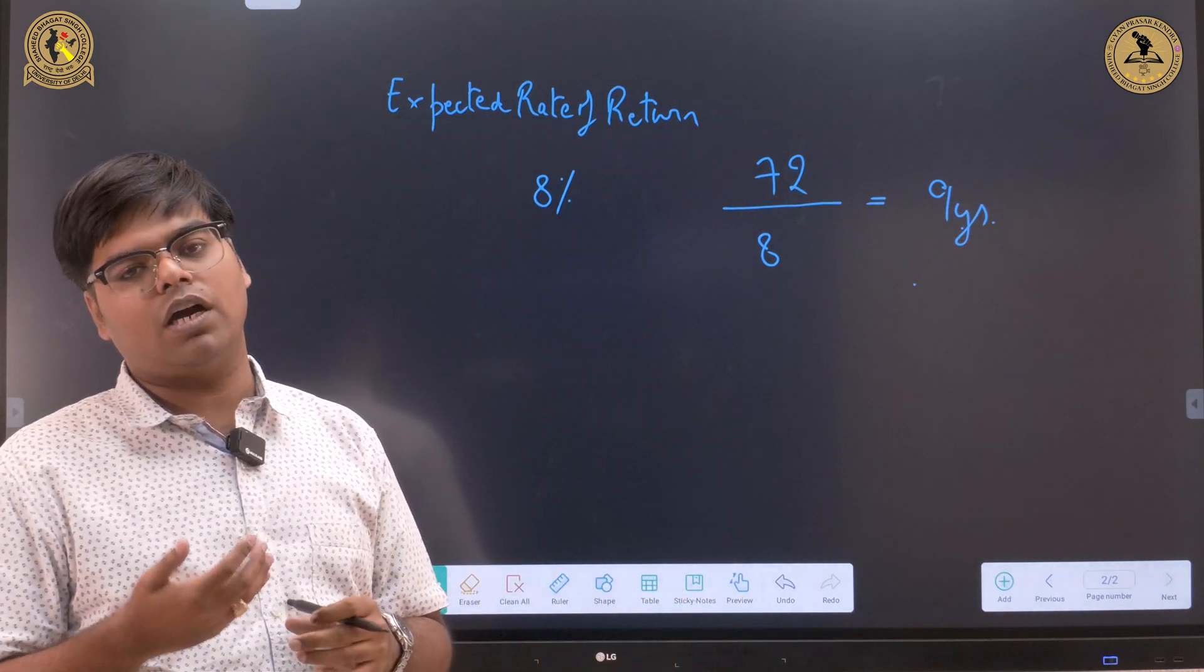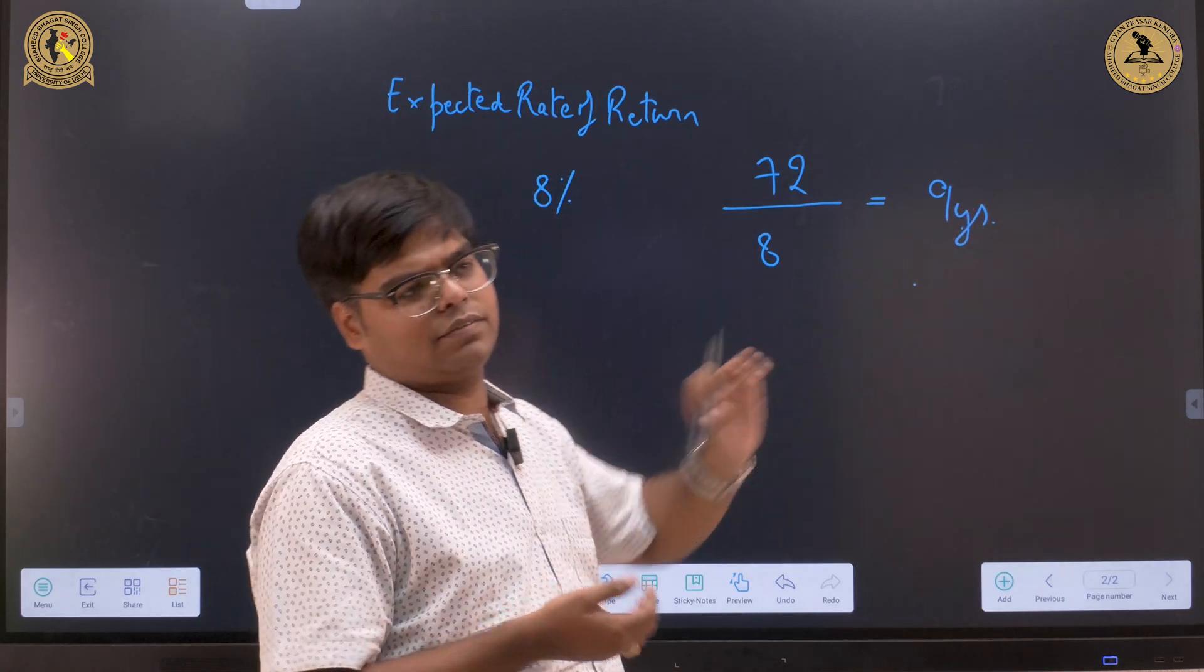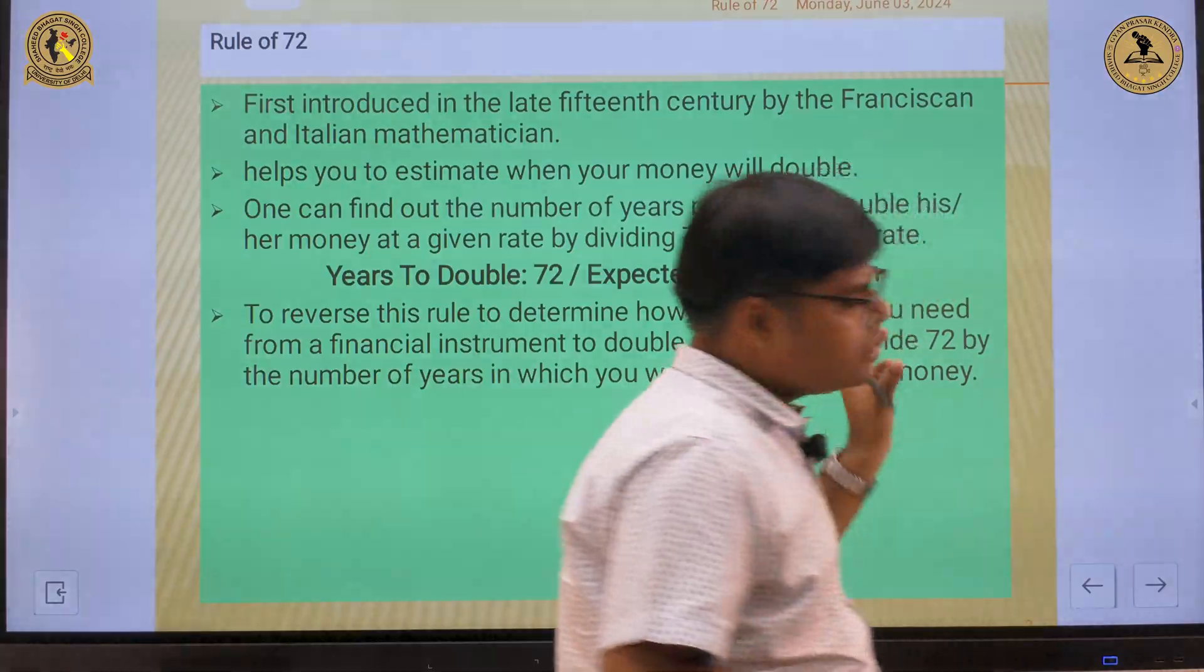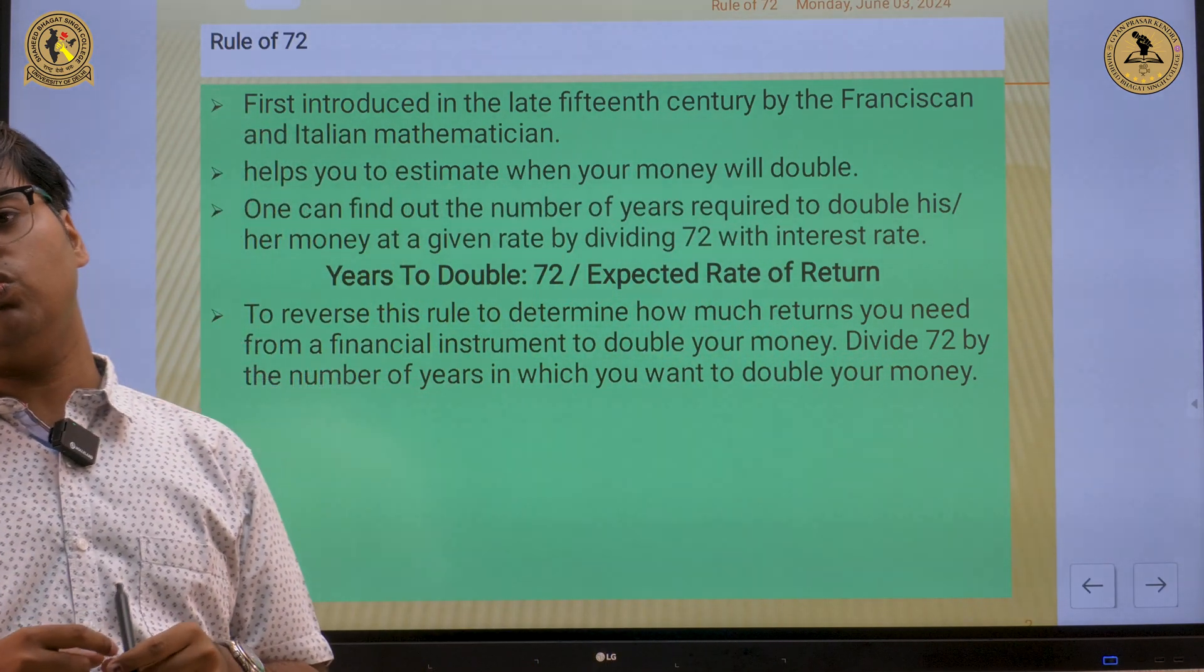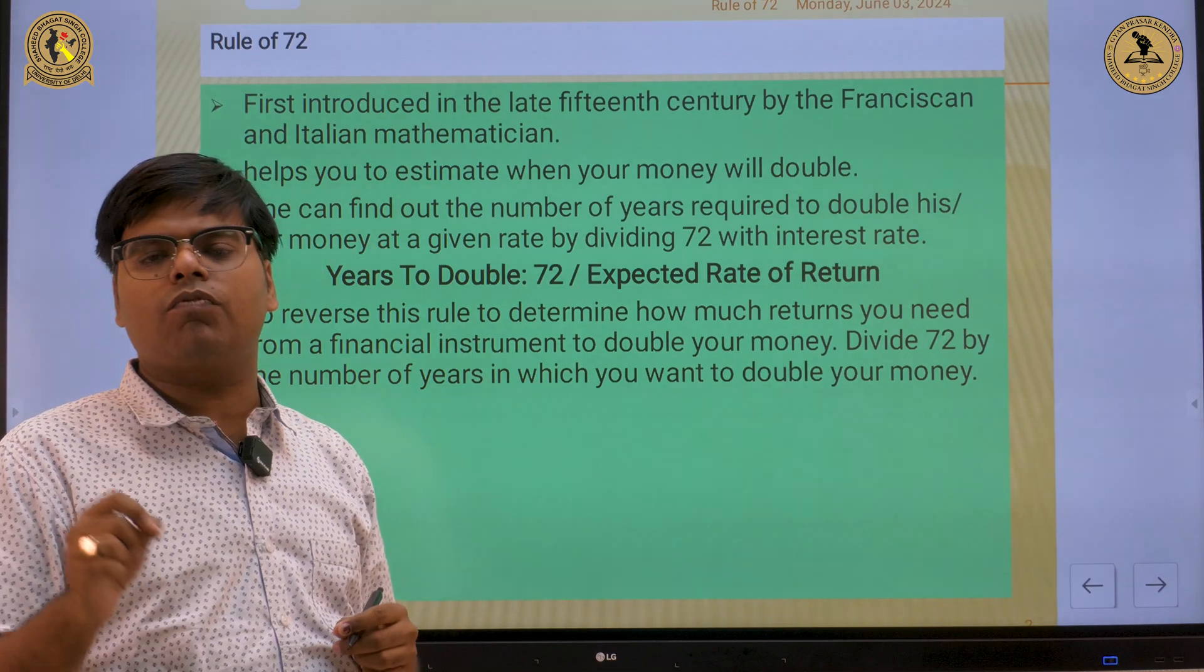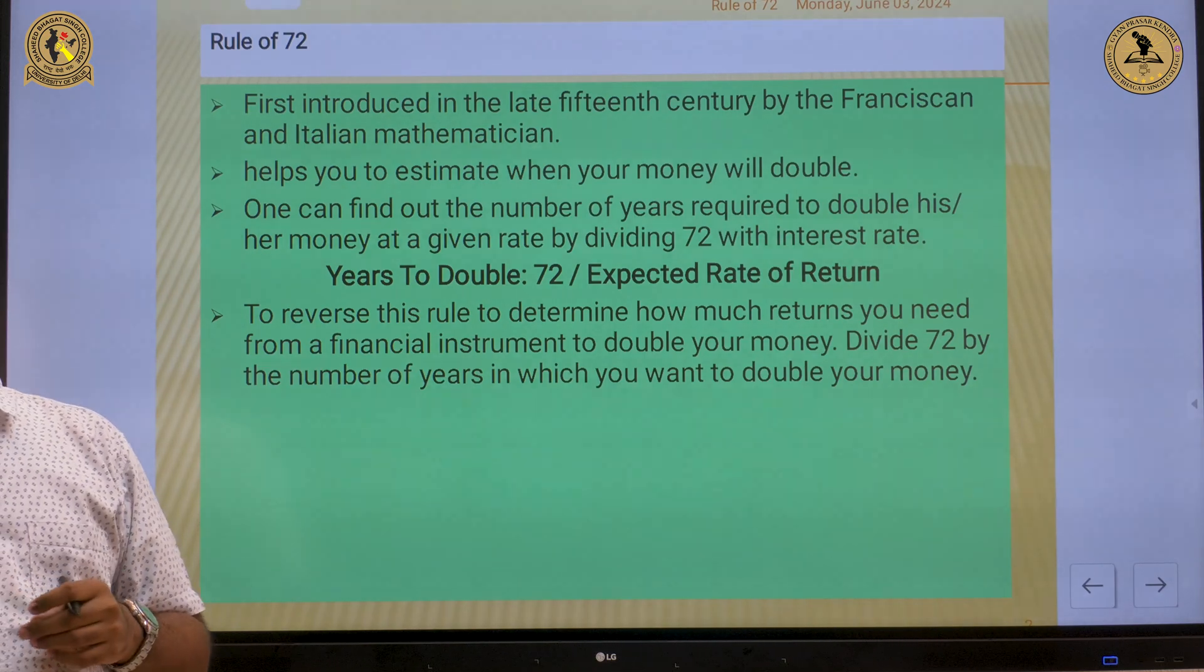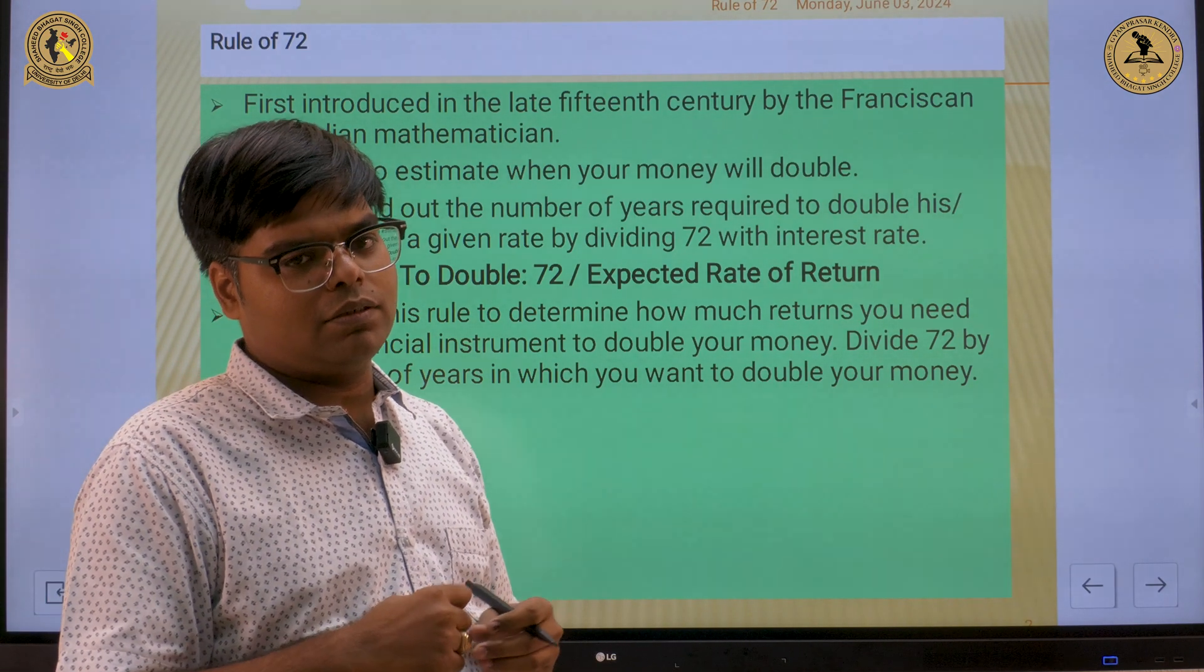It means that whatever amount you have invested, that amount will get double in 9 years. So if I have invested 100 rupees it will reach 200 in approximately 9 years. Now alternatively, this rule of 72 can also help you to estimate the expected rate of return which you expect from your investment.